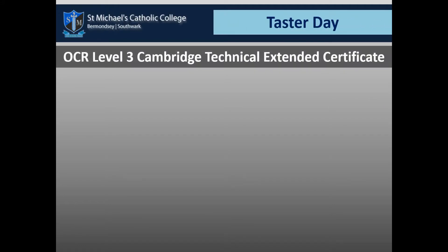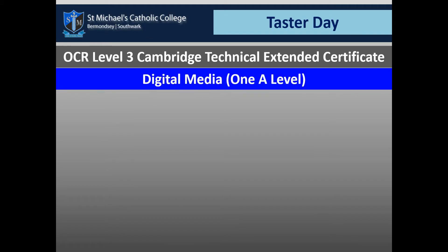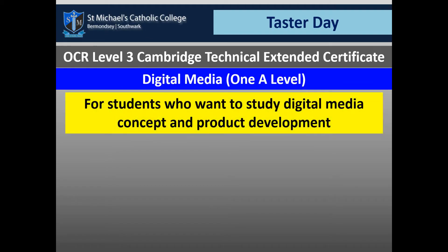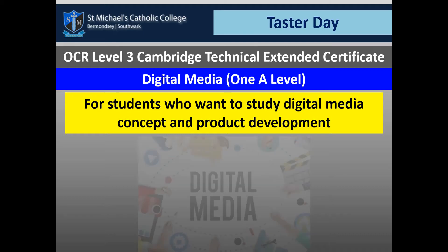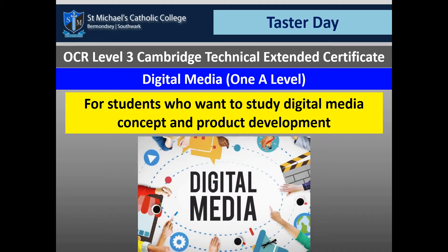The OCR Level 3 Cambridge Technical Extended Certificate is the course that you would be doing. It's a 1 A-level equivalent, and it's really for students who want to study digital media, that kind of concept and product development. You learn a range of skills with different kinds of software in the digital media course.